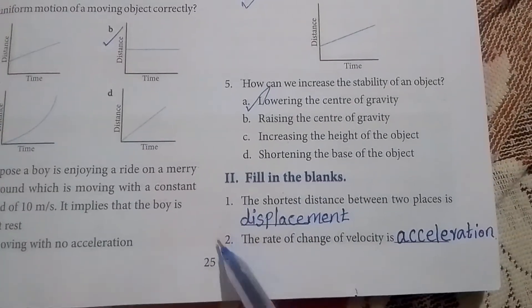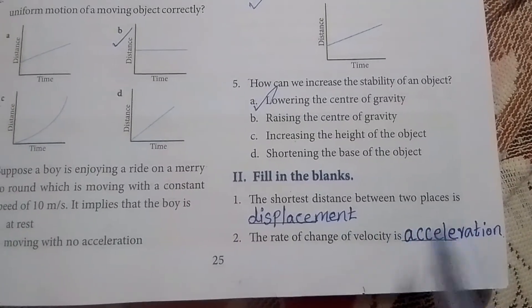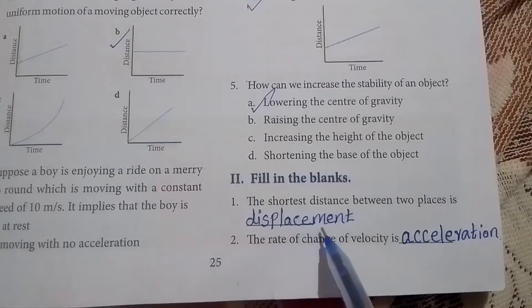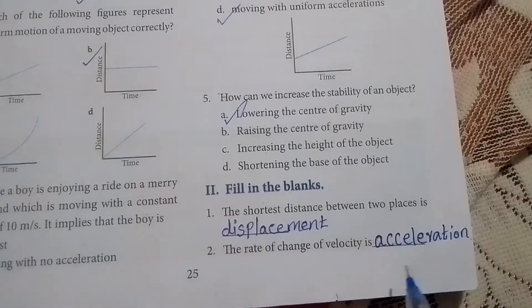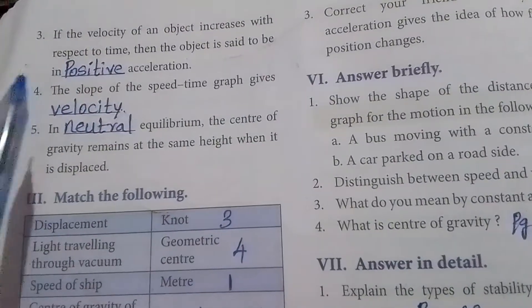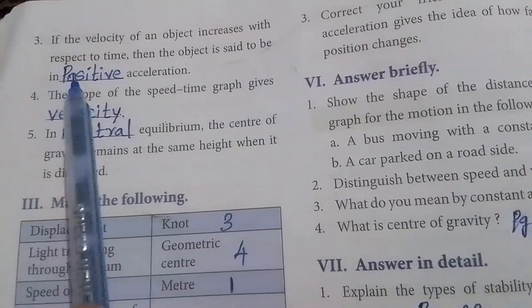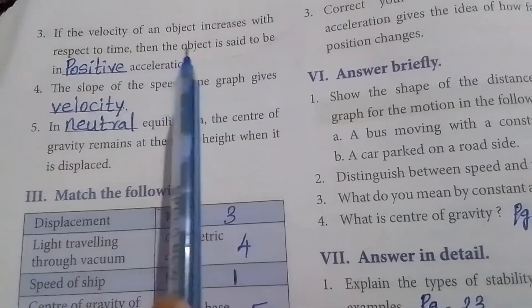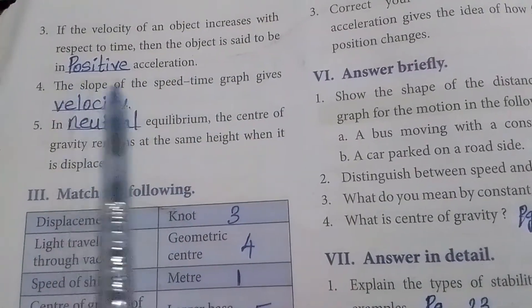Second Roman letter: Fill in the blanks. First one: The shortest distance between two places is - answer, displacement. Second one: The rate of change of velocity is - answer, acceleration. Third one: If the velocity of an object increases with respect to its time, then the object is said to be in - positive acceleration.